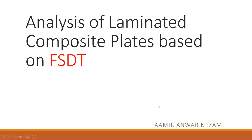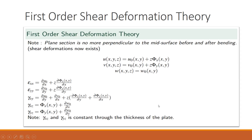Let us have a brief review of first order shear deformation theory. In the first order shear deformation theory, the plane section is no more perpendicular to the mid-surface before and after bending, as that assumption was there in the classical plate theory. The displacement field along the x axis will be u0(x,y) plus z times phi_x(x,y), v(x,y,z) equals v0 plus z times phi_y, and w(x,y,z) is only a function of the mid-plane and not a function of z.